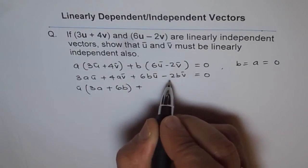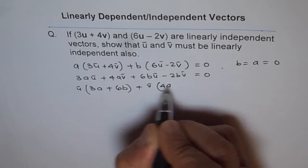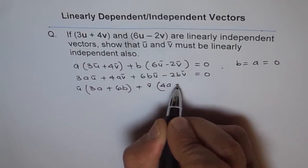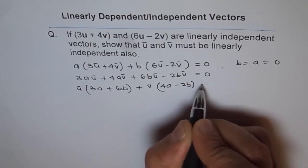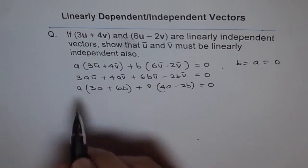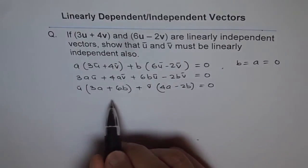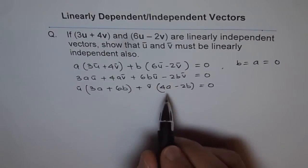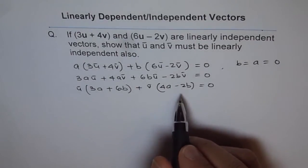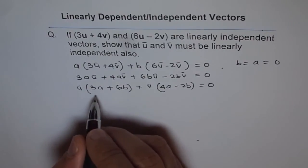Now we know that for this to equal 0, u and v are not 0. They are non-zero vectors, and therefore 3a + 6b and 4a - 2b should be 0. So we can write this as: